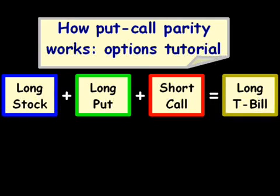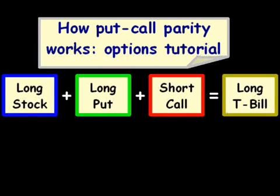Now, basically what put-call parity is, is it says that this relationship has to hold true, and if it doesn't, there are arbitrage opportunities. When I say arbitrage opportunities, I mean after transaction costs — like the bid-ask spread and broker fees and stuff like that.